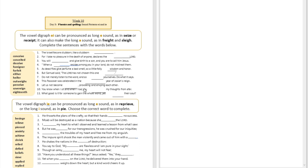Question number one: 'The Israelites are stubborn like a stubborn ___.' The answer is 'heifer.' That's how you pronounce it — you're welcome to check and validate that from your dictionary, Webster's 1828 dictionary, dictionary.com, or a paper copy of a dictionary.